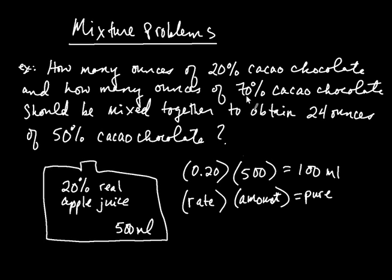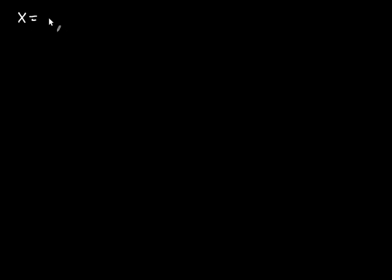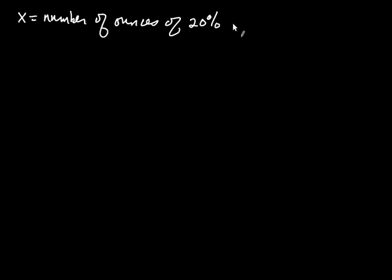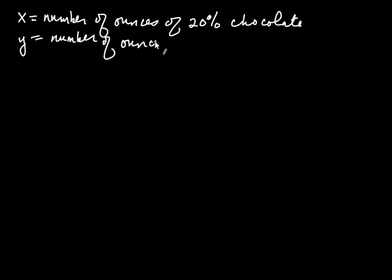We're mixing 20% chocolate and 70% chocolate to get 24 ounces of 50% chocolate. Let's write down what we have. We're looking for the amount of 20% chocolate we need to add, so x is going to be the number of ounces of 20% chocolate. We're also looking for how much 70% chocolate, so y is the number of ounces of 70% chocolate. The problem is asking us for two things, and x and y represent each one.